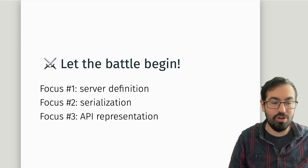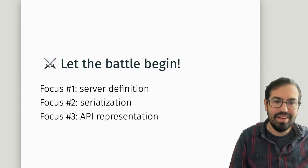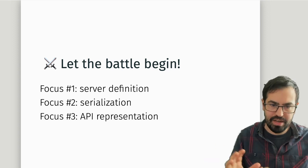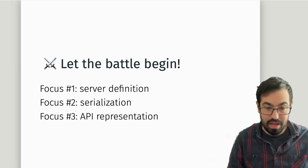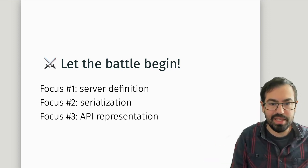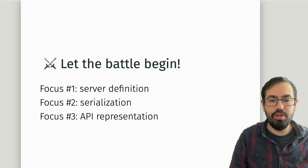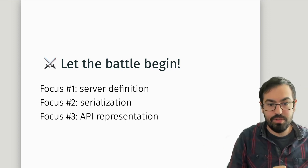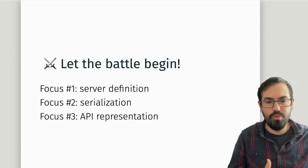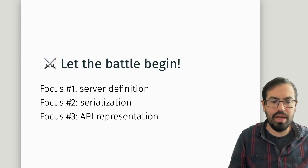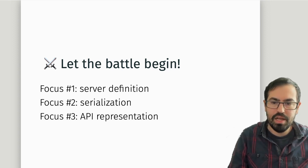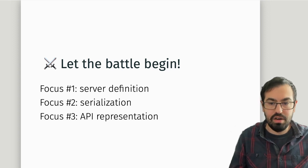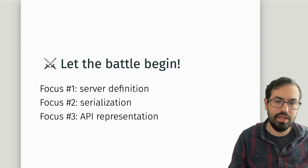Let's focus on three different things important when working with these libraries: how you define the routes or methods on your service, how you serialize and deserialize information, and how you represent your API as a type.